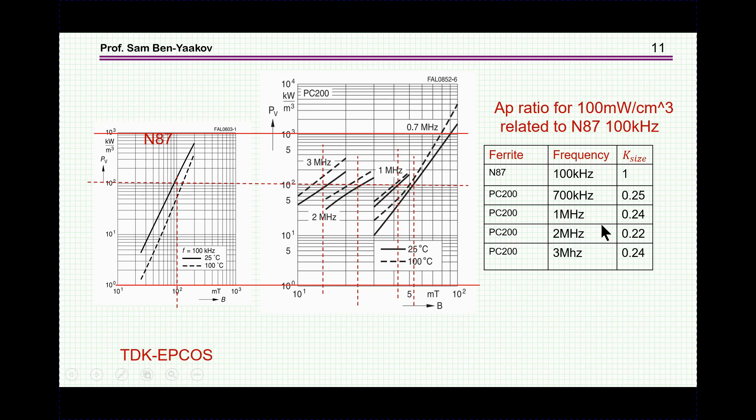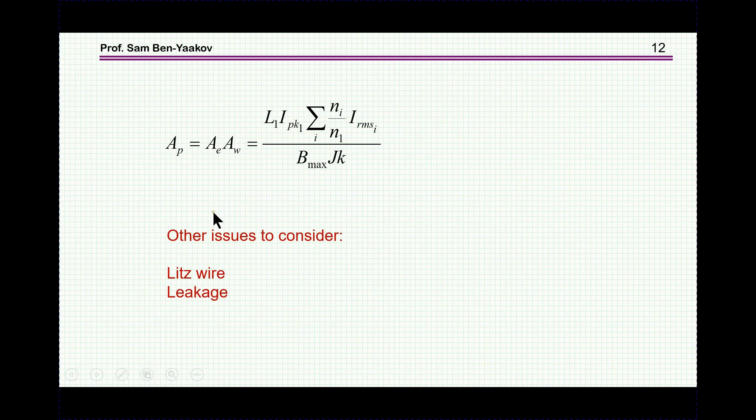There is no question that when designing an LLC converter for high frequency, and if you have the right ferrite, like here is the case, you can get an AP which is lower, and therefore the size of the coupled inductor, or the magnetic element, will be smaller. Of course, this goes the same way for the L_R, because it is also an inductor. In general, we can say that AP is going to decrease, given the proper ferrite, but there are some other issues to consider.